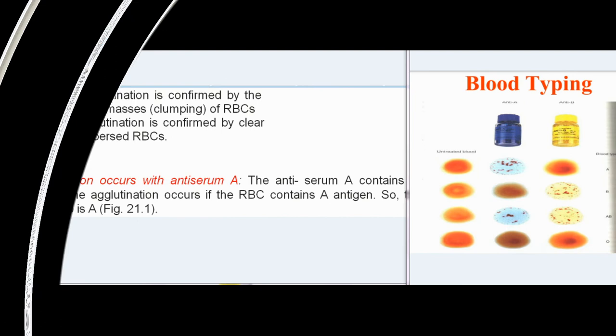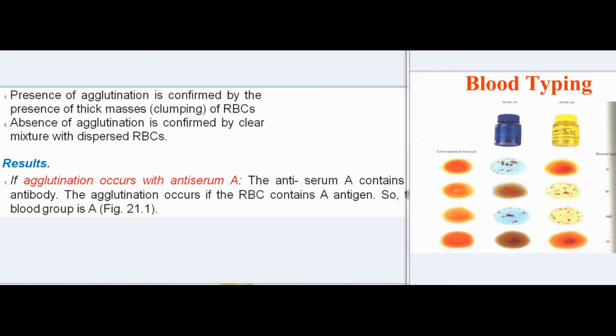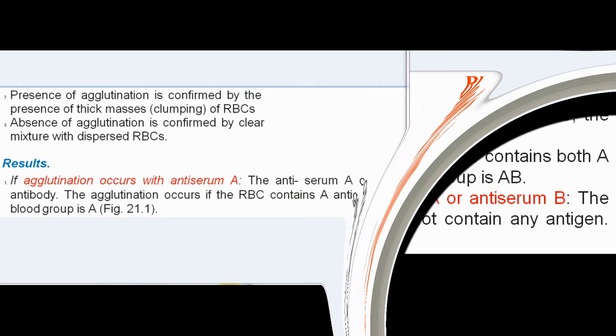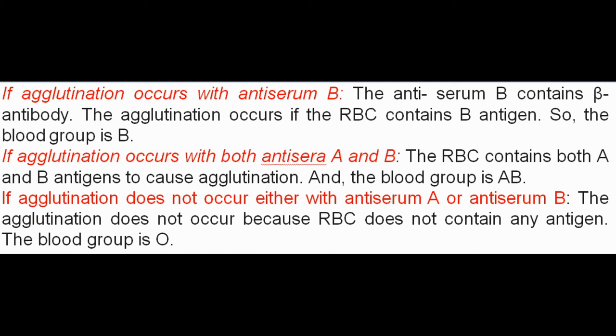Results of Blood Typing: If agglutination occurs with antiserum A (which contains alpha antibody), it indicates RBCs contain A antigen — blood group is A. If agglutination occurs with antiserum B (containing beta antibody), RBCs contain B antigen — blood group is B. If agglutination occurs with both antiserum A and B, the RBC contains both A and B antigens — blood group is AB. If agglutination does not occur with either antiserum, the RBC contains no antigen — blood group is O.